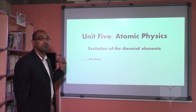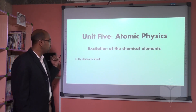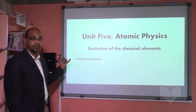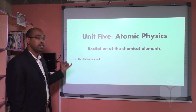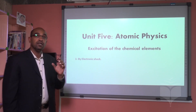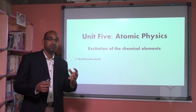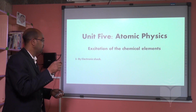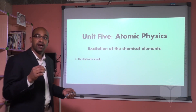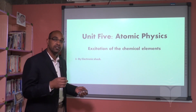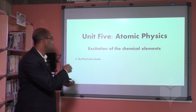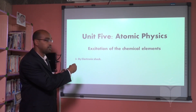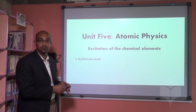There are three ways to achieve excitation. Number one is by electronic shock — we take a stable atom and shoot it with an electron moving with very high kinetic energy. This will cause the atom to separate into free electrons and positive ions.